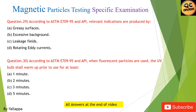Question 29: According to ASTM E709-95 and API, relevant indications are produced by: (A) greasy surfaces; (B) excessive background; (C) leakage fields; (D) rotating eddy currents.